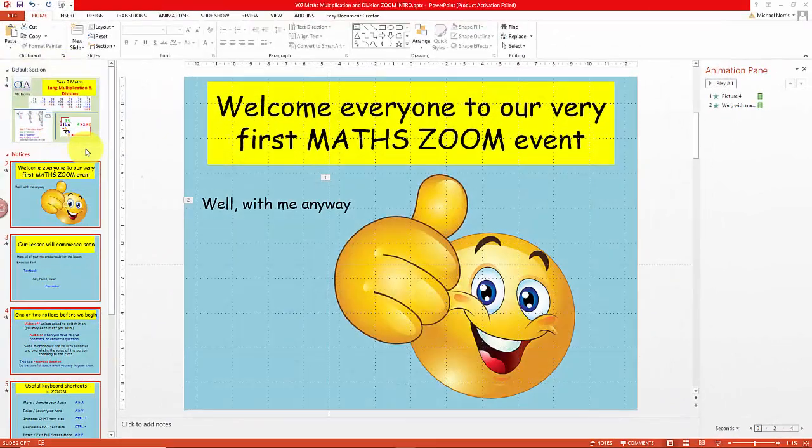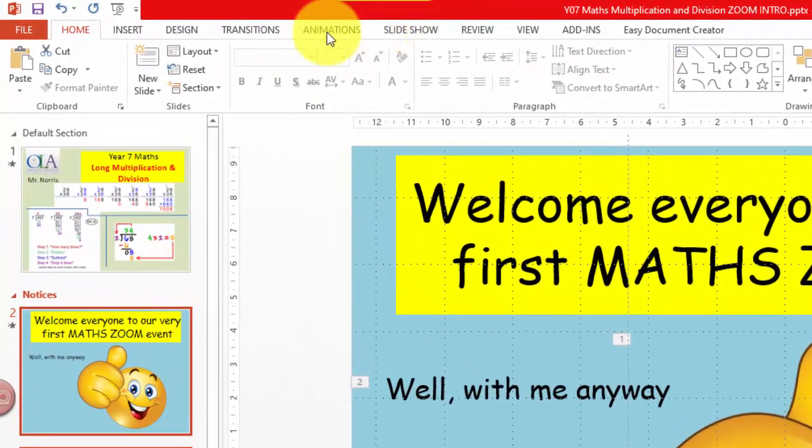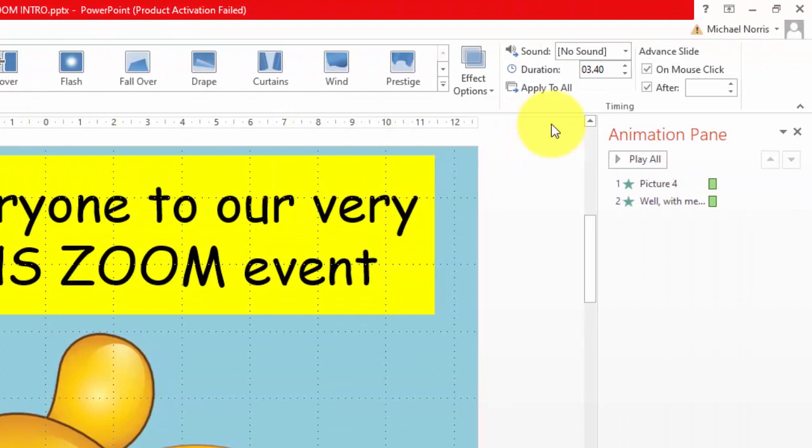Now because this is going to be a self-running slideshow running in the background, you do need to set the time of transition between each of the slides. So go to the transition menu option, click on transitions, and then you'll see on the right hand side details about how long to give before you advance to each slide.